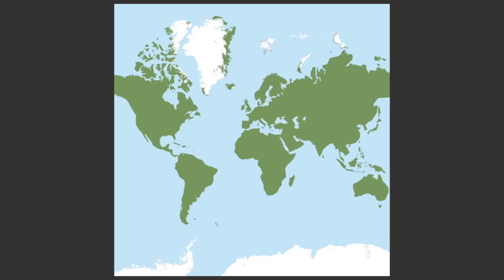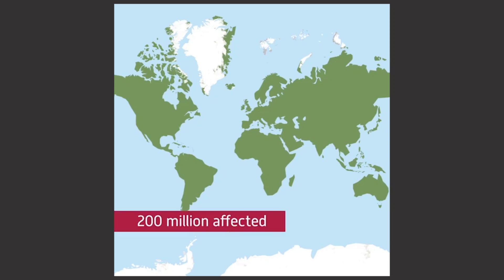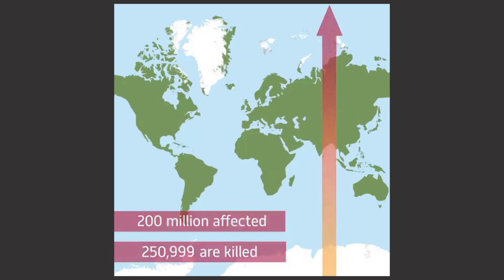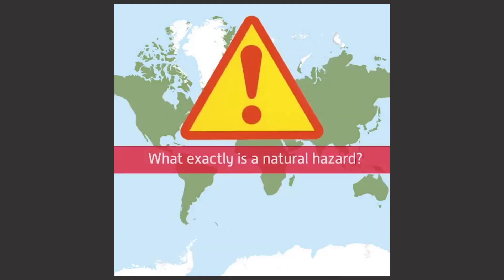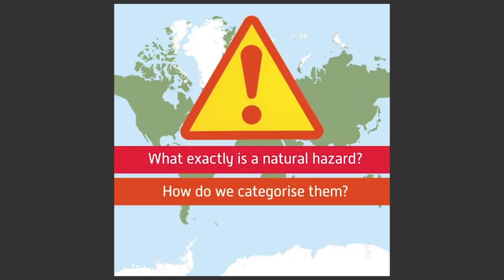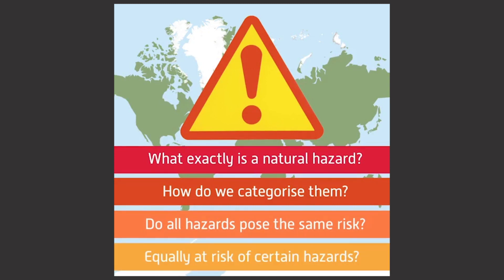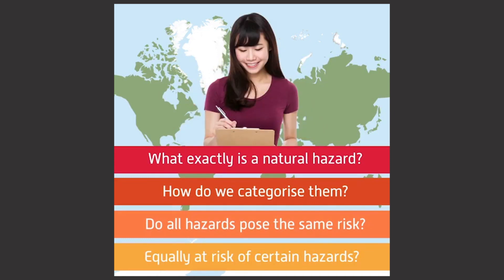Every year across the world, around 200 million people are affected by natural hazards and 250,000 are killed. This number is increasing every year. But what exactly is a natural hazard? How do we categorize them? And do all hazards pose the same risk? Are all people equally at risk of certain hazards? In this pod, we'll look at answering these questions.